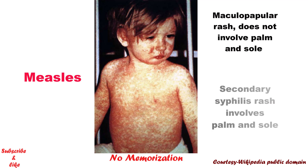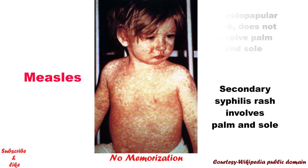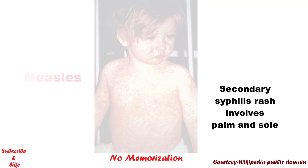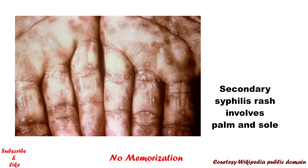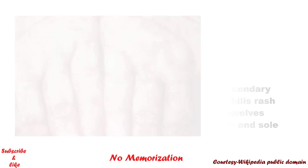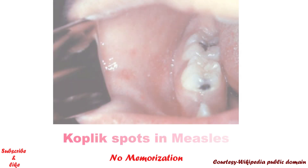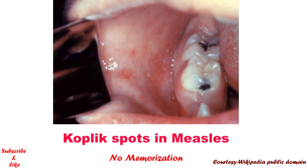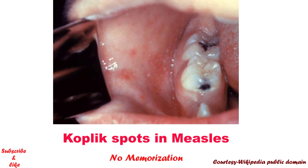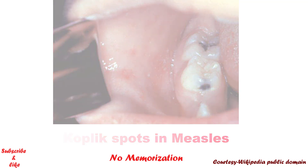On the contrary, secondary syphilis, although an STD, presents with a similar maculopapular rash but also involves the palms and soles — like this. Now you see the difference. You may also see a picture of Koplik spots like this — tiny white spots seen inside the cheeks opposite the molars. So it is possible that you may not see a picture of a rash in your exam but rather a picture showing Koplik spots.